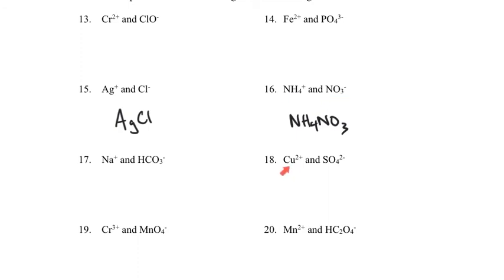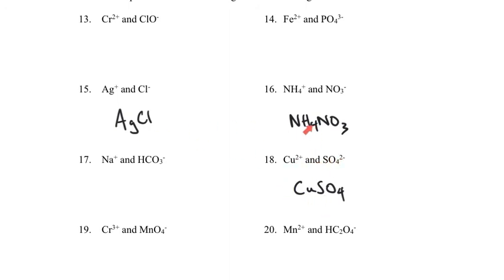Looking at number 18: we have Cu with a plus two charge and a sulfate ion SO4 with a negative two charge. The positive two and negative two balance out, so you only need one of each. The formula is CuSO4. The twos cancel out — just one of each. So far, all these have just been one of each, and everything's canceled out.